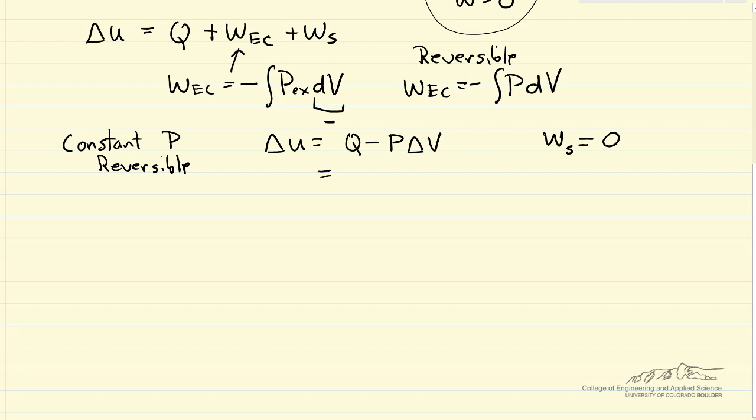And so I can rearrange this, because pressure is constant, I can put it inside this delta sign, and then I can bring that term to the other side of the equation. And our definition of enthalpy is U plus PV, so the left side is delta H. So delta H equals Q.